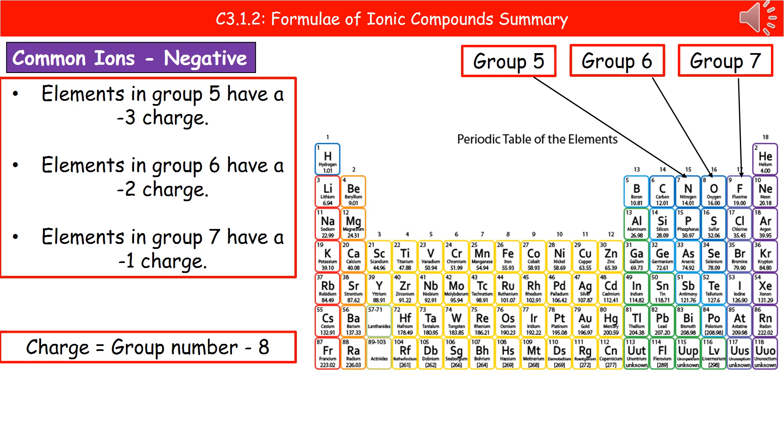Moving on to the negative common ions. Again, there's a simple rule to help us identify the charges. Group five elements have a negative three charge, group six has negative two, and group seven has negative one. The way to work that out is simple: take the group number and subtract eight from it, and that gives you the charge on that particular ion.